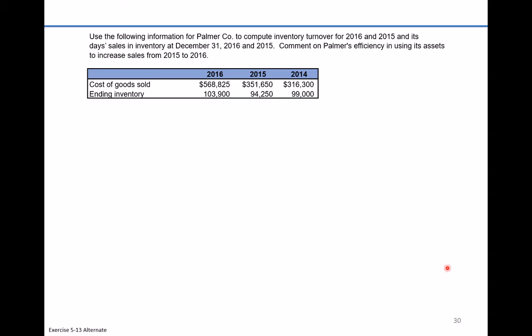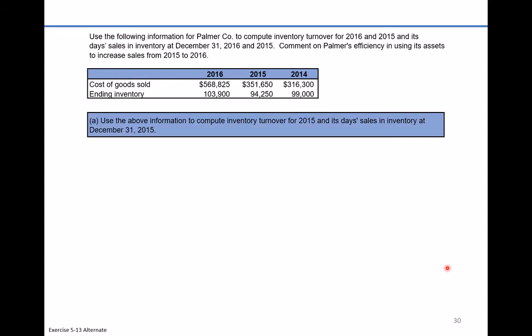The table shows us the data to solve the problem. We have cost of goods sold for each of the three years and ending inventory for each of the three years as well. Part one is to compute inventory turnover for 2015 and day sales in inventory at December 31st, 2015.